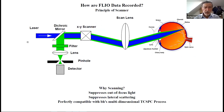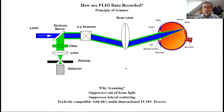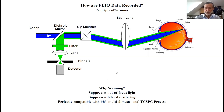In reality, the Heidelberg Engineering system is a bit more complicated—there is also compensation of eye movement. No human patient can keep their eyes steady on one point for longer than a few seconds, so eye motion is detected and compensated in the data. What you should know is we are scanning to suppress out-of-focus light and lateral scattering, so we get much better images.